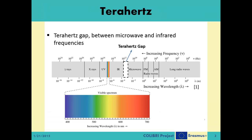Terahertz waves fall between the microwaves and the infrared light waves. They have a wavelength between 100 micrometers to 1 millimeter and frequencies between 0.3 to 3 terahertz. This region, called the terahertz gap, represents an area in the electromagnetic spectrum where the frequency of electromagnetic radiation becomes too high to be measured digitally via electronic counters. Therefore, the frequency must be measured by proxy using the properties of wavelength and energy. Similarly, the generation and modulation of coherent electromagnetic signals in this frequency range becomes much harder by the conventional electromagnetic devices used to generate radio waves and microwaves.